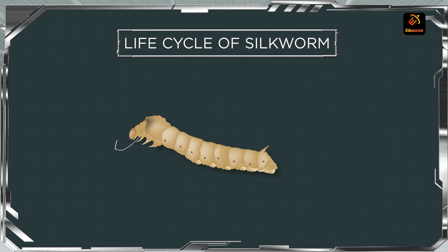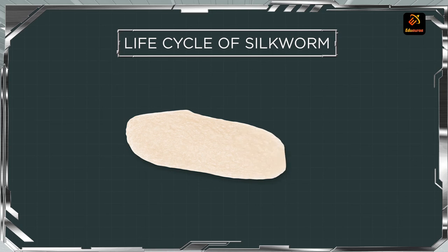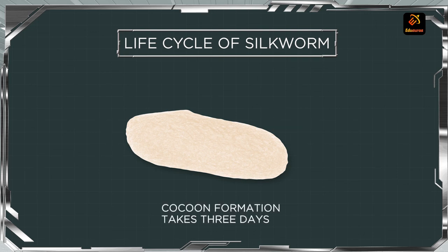Once the salivary glands are modified and the cocoon formation starts, the entire formation of the cocoon takes three days. We were talking about a thousand to two thousand meter long thread of silk from a single cocoon, and it just takes three days for the caterpillar to develop that cocoon. So you can understand how important these insects are to us.